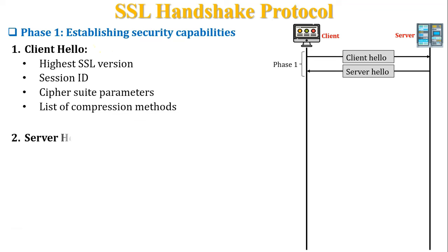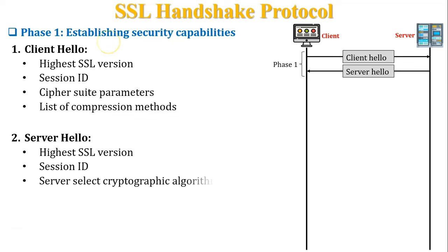In the server hello message, the first parameter is the highest SSL version the server can support. The next is session ID. The third is the server-selected cryptographic algorithm — the server selects one algorithm from the list sent by the client. The fourth is the server-selected compression method — the server selects a compression method from the list sent by the client.